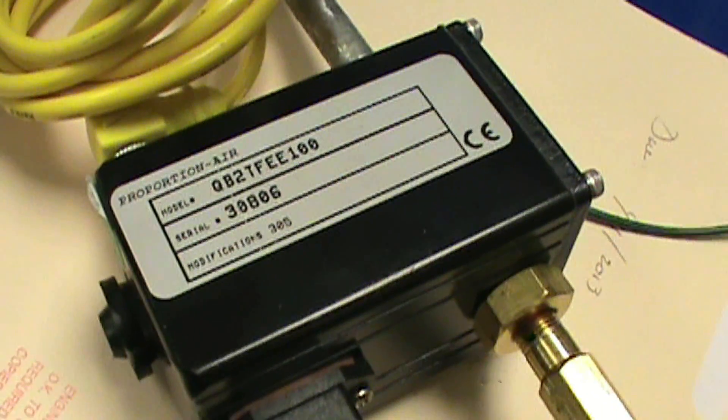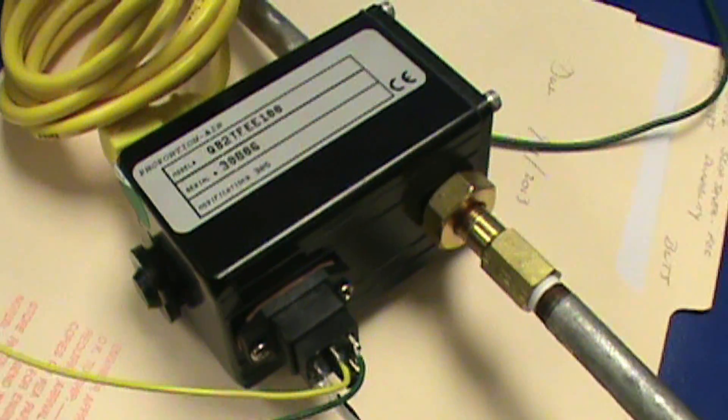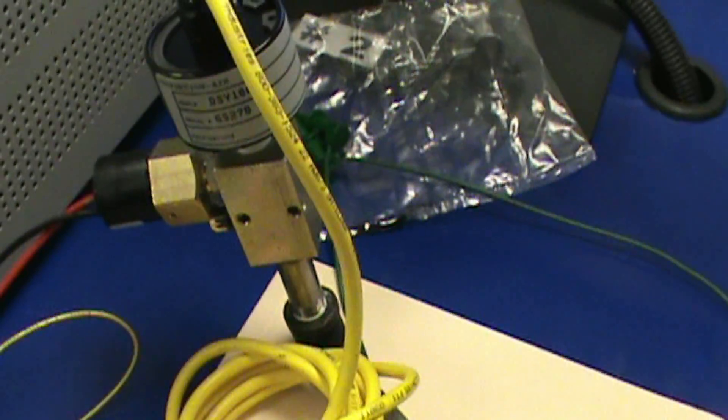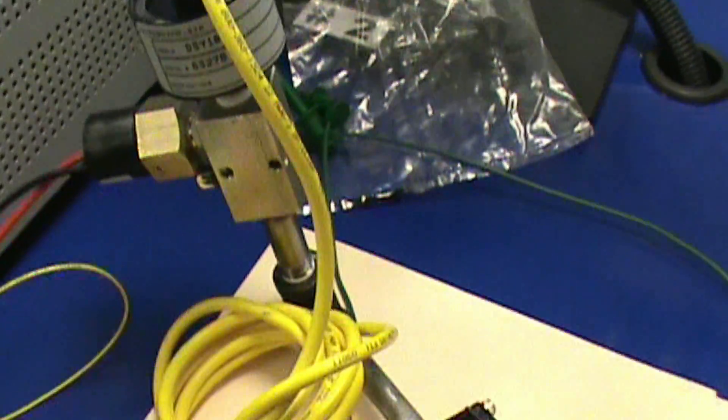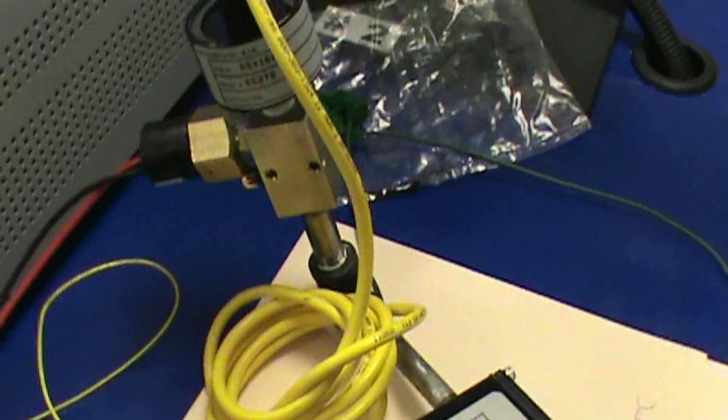The heart of our setup is this little proportional air controller. It takes a 0-10 volt ramp which comes from our National Instruments equipment and generates a 0 to 100 psi output. It has an accompanying pressure transducer that it reads and close loops on, so you get very precise control.